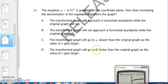So the question is, based on the last two answers: the transformed graph will go to infinity slower, or the transformed graph will go to infinity faster than the original graph?